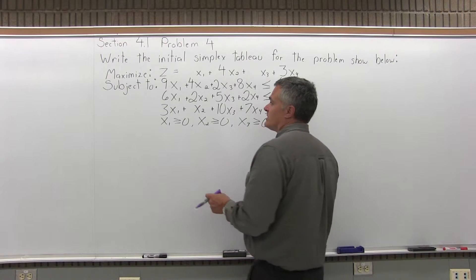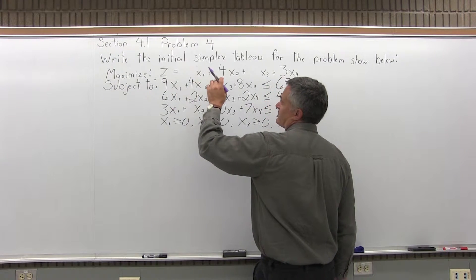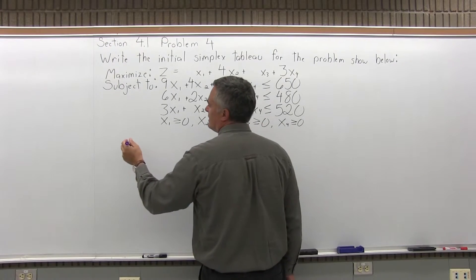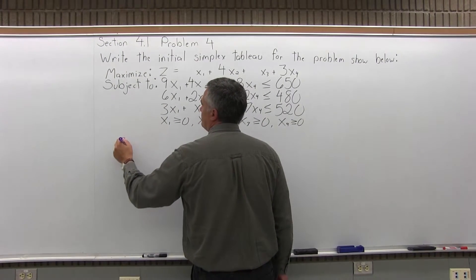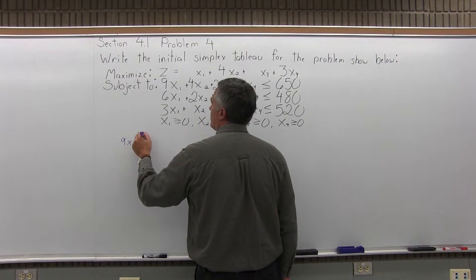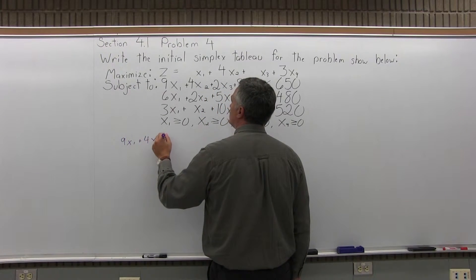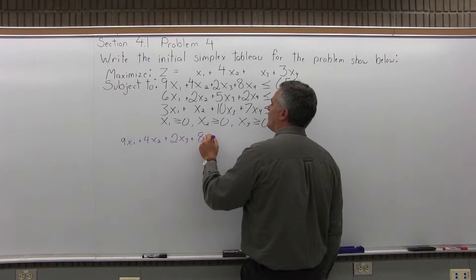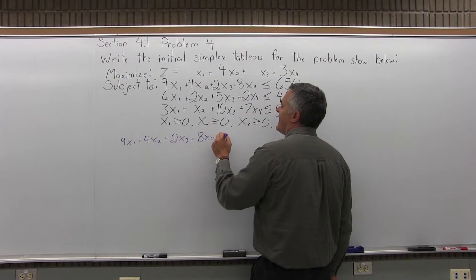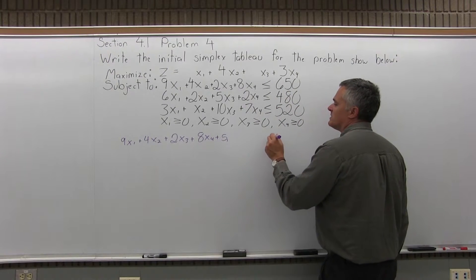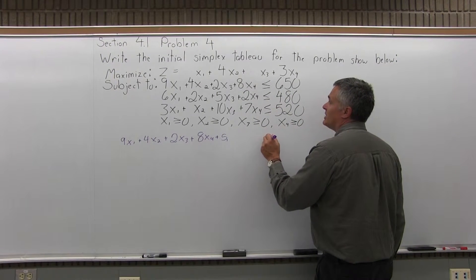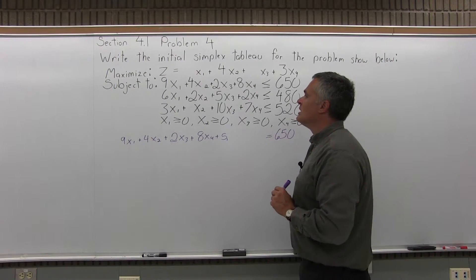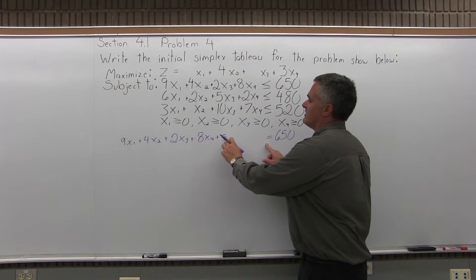The first constraint is 9x1 plus 4x2 plus 2x3 plus 8x4 less than or equal to 650. As an equation, that would be written: 9x1 plus 4x2 plus 2x3 plus 8x4 plus s1 equals 650. Now it's an equals because I added the slack variable.